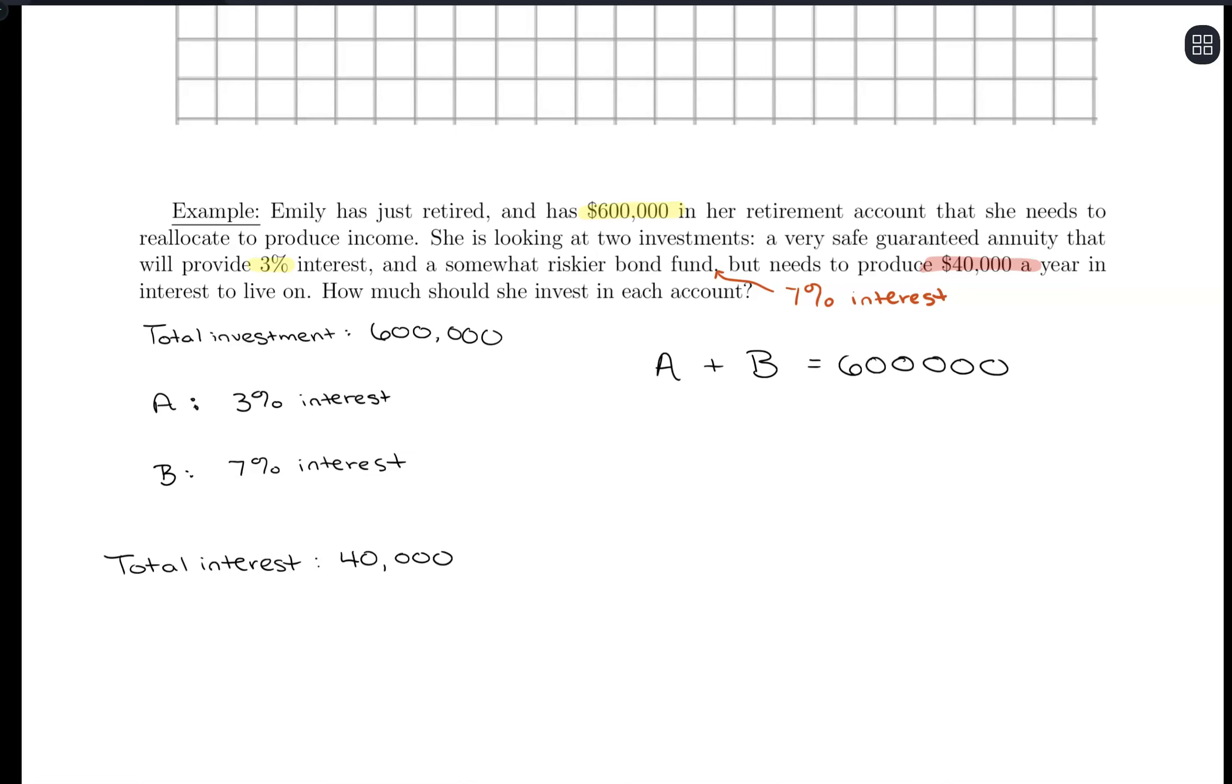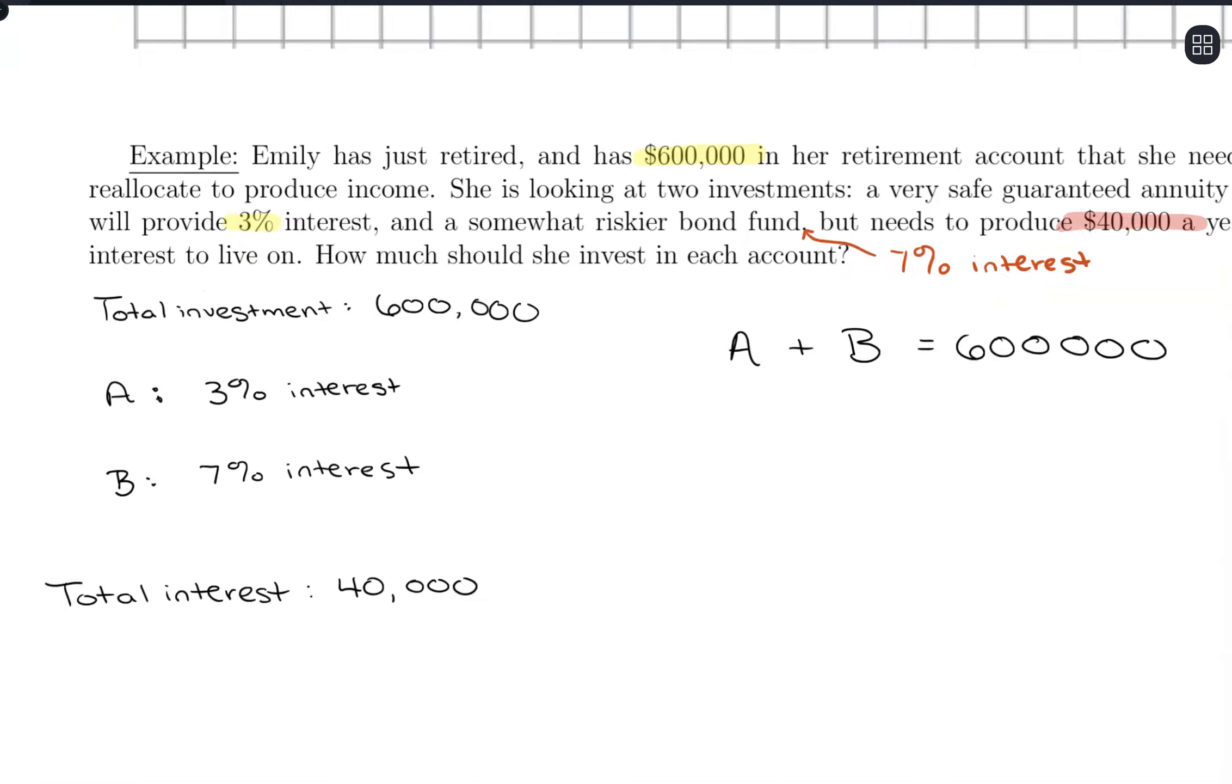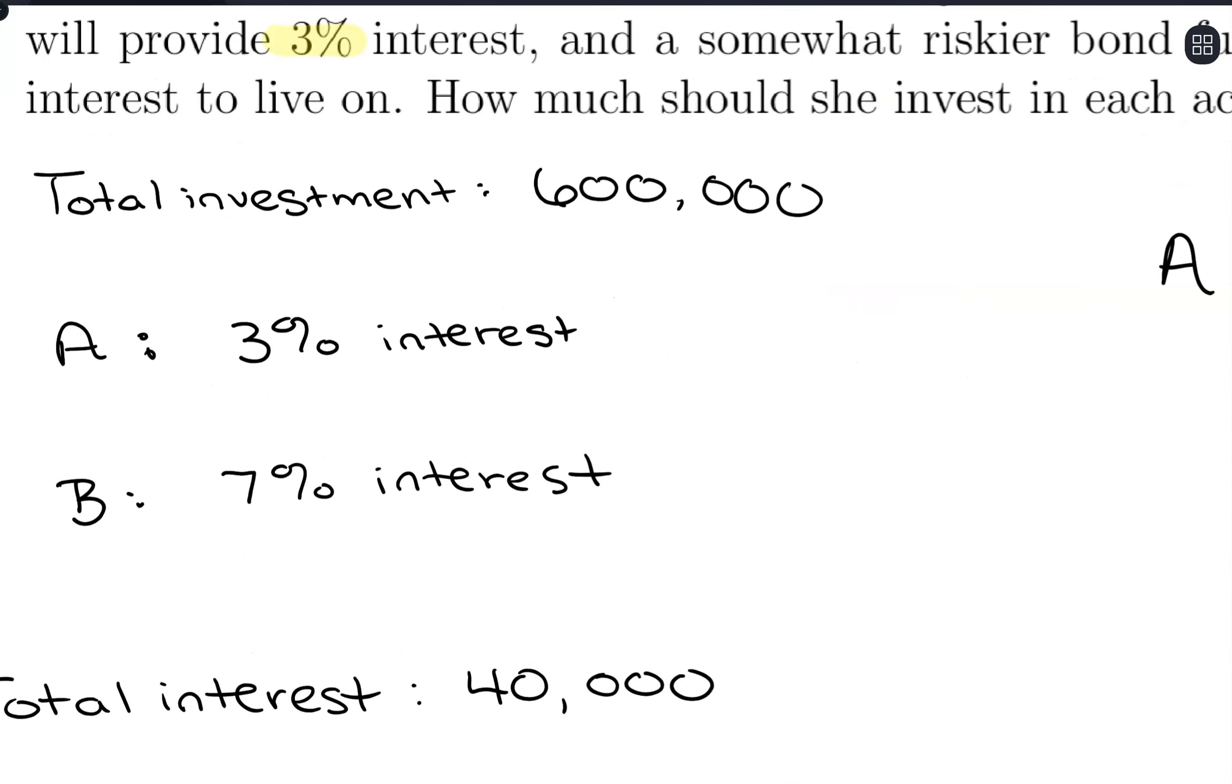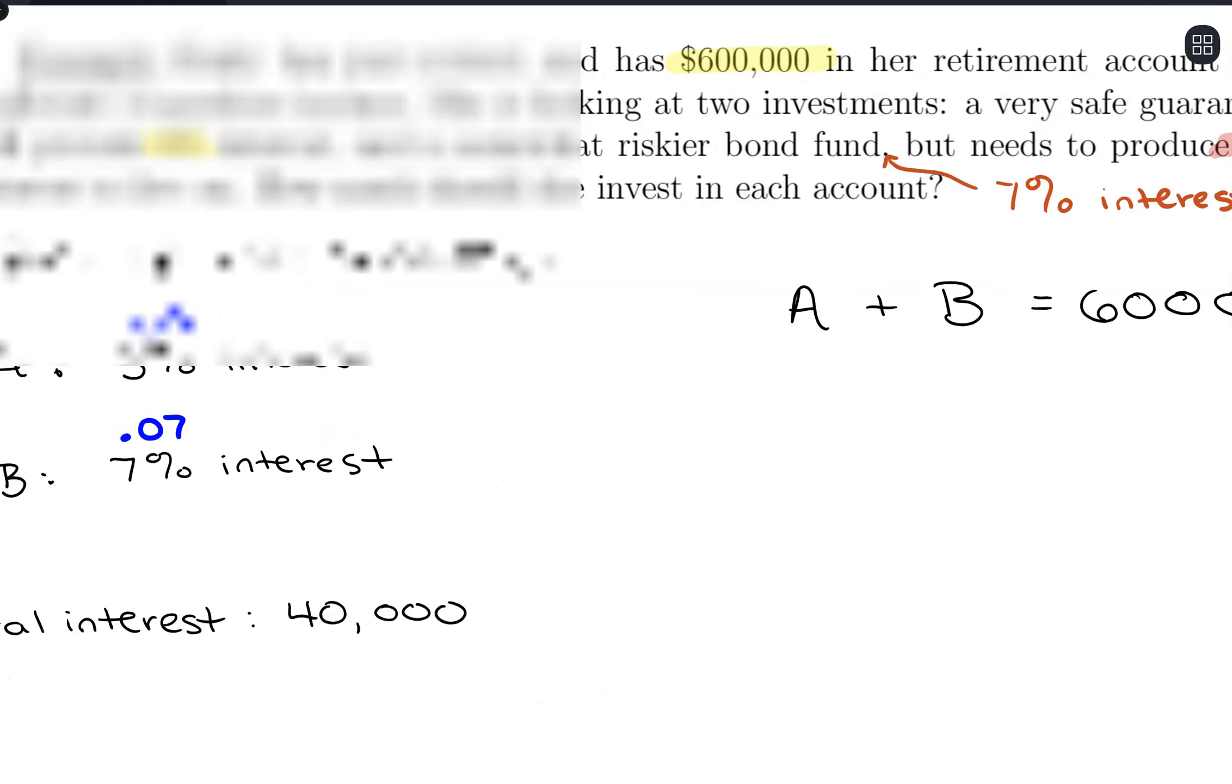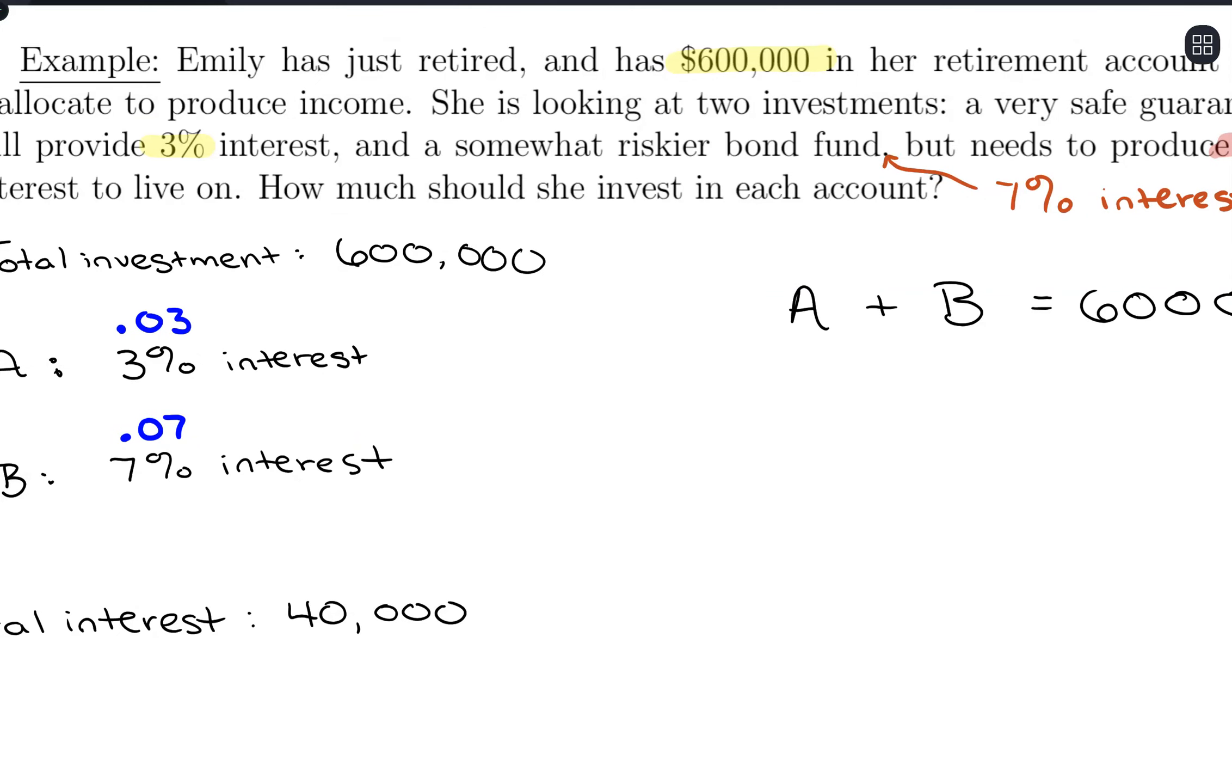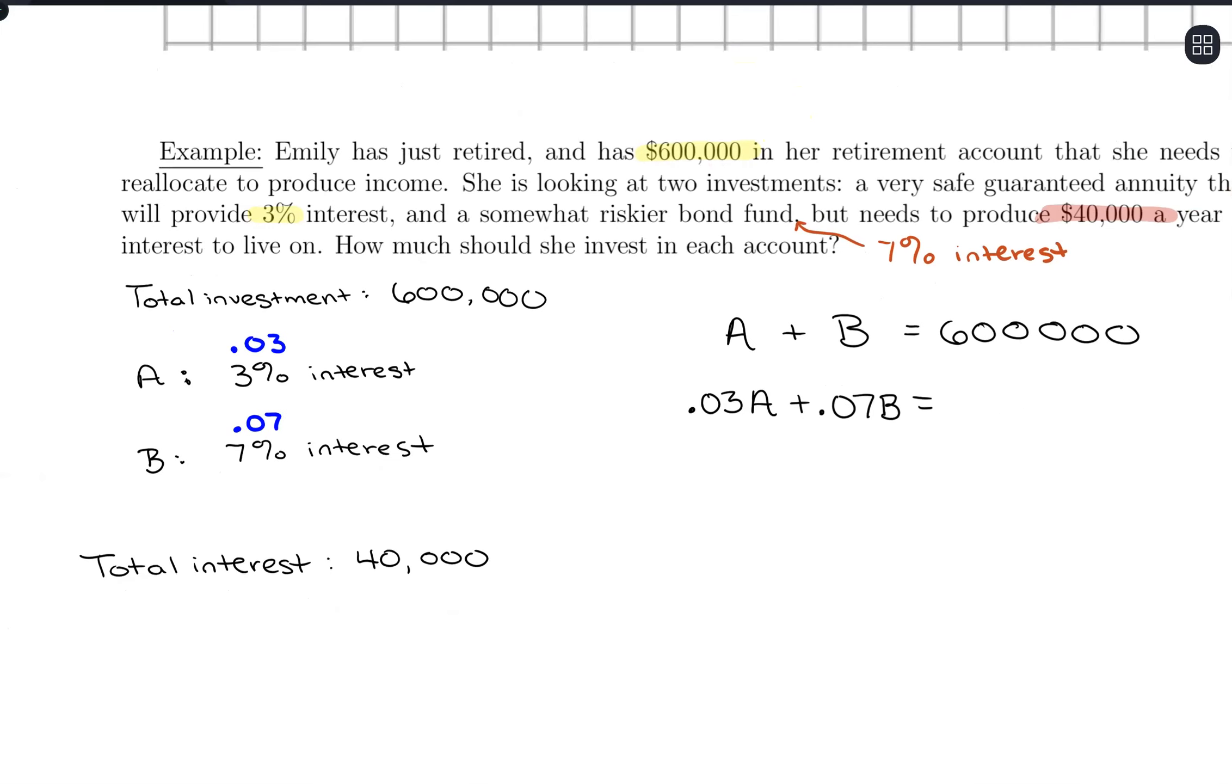Now, in terms of interest, we're taking 3% interest of A, and to write that out, so we want to think about the decimal form of these percentages. So 3% is the equivalent of 0.03. 7% is the equivalent of 0.07. So if we take 3% of A, 0.03 of A, plus 0.07 of B, we want that total interest to be $40,000.